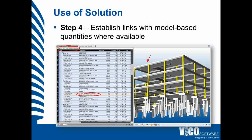In step four, we're going to establish links with model-based quantities where available. The column highlighted here represents an element from your building information model — a BIM element that has takeoff quantities. Those quantities can be used in a formula for any of the line items brought in from MC squared or Timberline. By assigning a formula using the formula editor, this automatically links the quantities from that element to the line item, making it a model-based quantity.